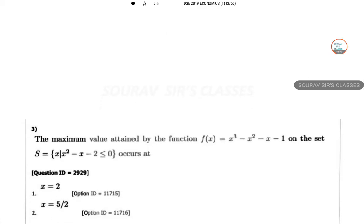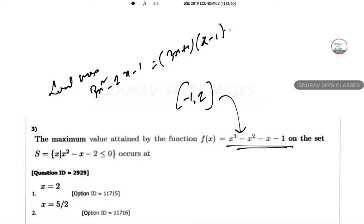The maximum value attained by the function f(x) = x³ - x² - x - 1 with this given set. If we just solve it, the solution set will be from -1 to 2, so the maximum of this will be within this set. The local function maximum using the first order condition: 3x² - 2x - 1, (3x + 1)(x - 1) = 0.